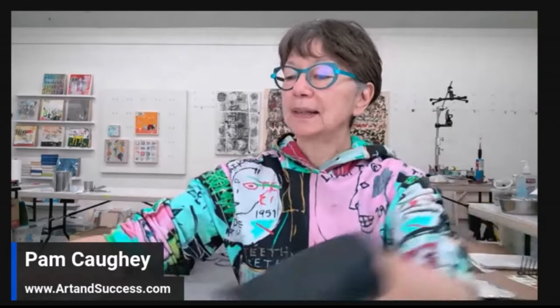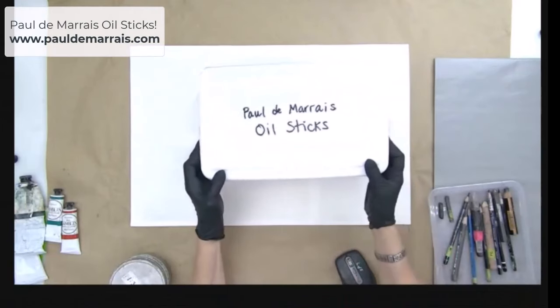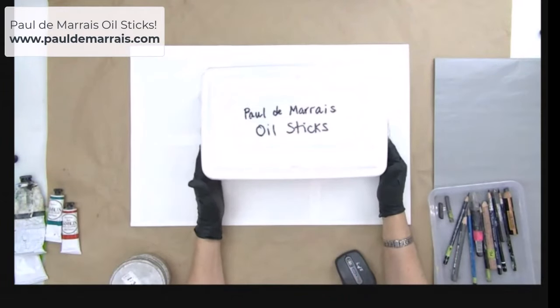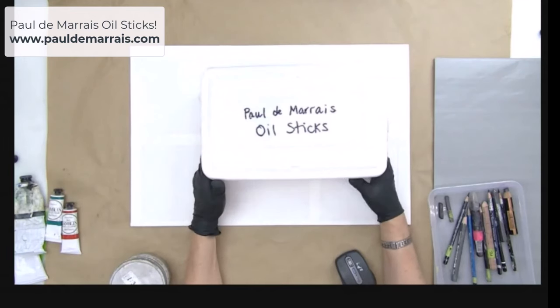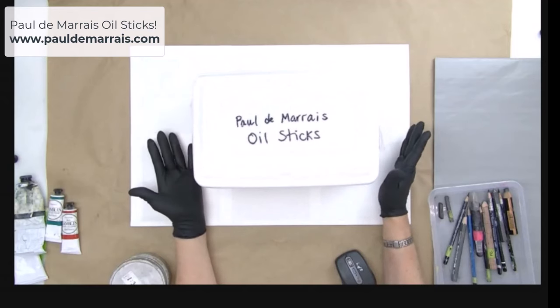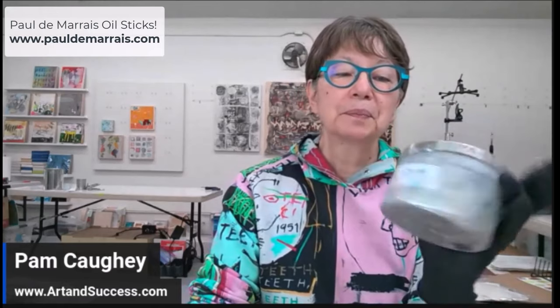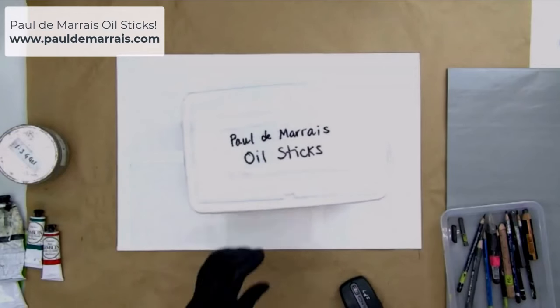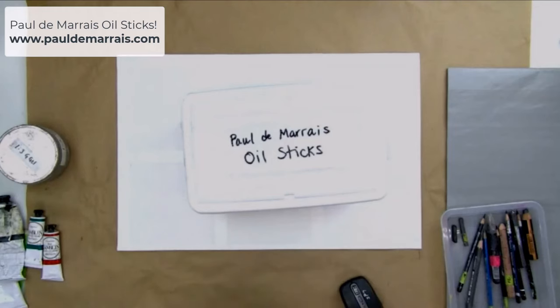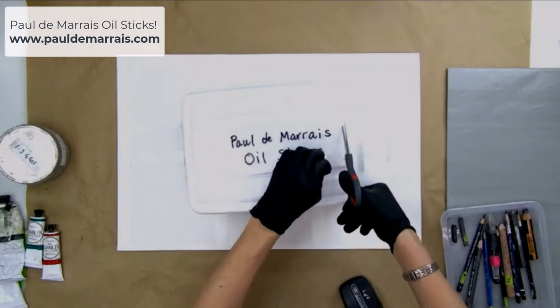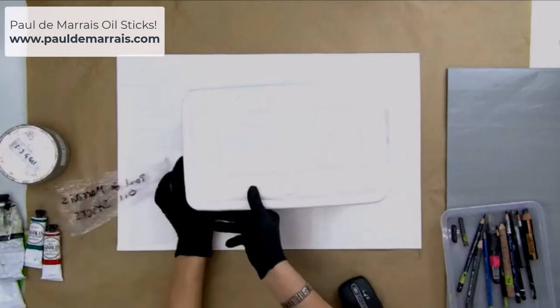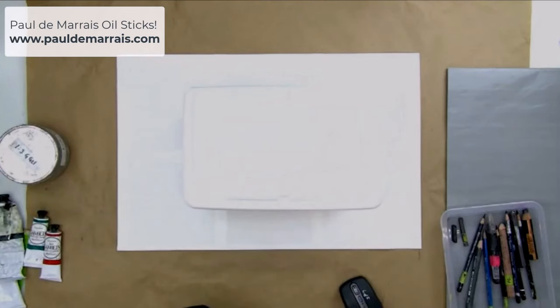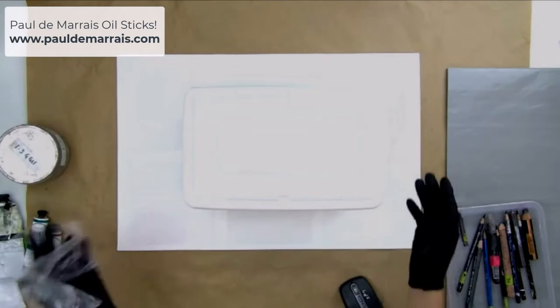But what I'm going to do today is I'm going to experiment with something, these are oil sticks by Paul Damaris. And I also use R&F pigment sticks, but I thought it'd be really fun just to play with oil sticks. I also have some cold wax medium that I have mixed with my G gel. Anyways, I'm going to pop this open and see what happens. I'm just going to play.